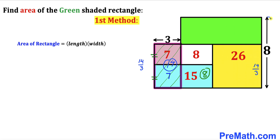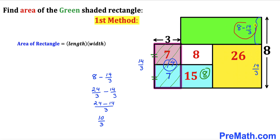We know the whole vertical length is 8 and this portion is 14 divided by 3. So the remaining side length of the green rectangle is 8 minus 14 over 3. When we simplify, that turns out to be 10 over 3. So the width of the green rectangle is 10 over 3.